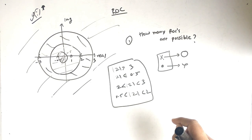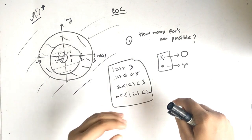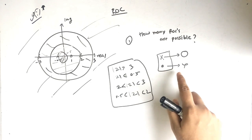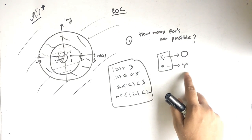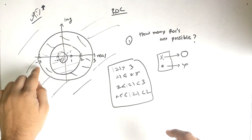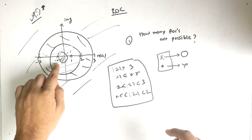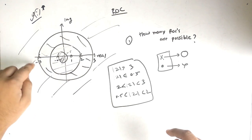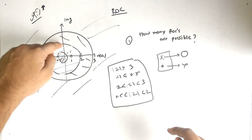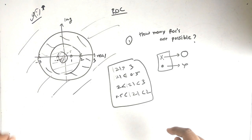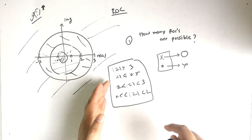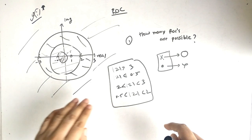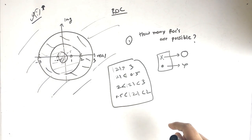Quick recap: from the pole side (marked X) we drew the circles, but from the zeros we did not draw circles. We have three poles: −3, −0.5, and 2. From these poles we drew the circles. ROC means we are covering the whole graph, and in four ways we can cover the whole graph.